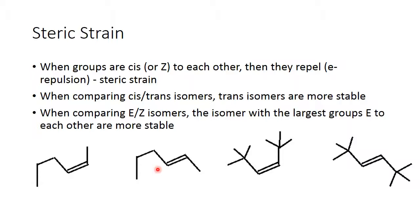Again, if both compounds can form in a reaction, the trans is more likely to form. Likewise, if both a cis and a trans alkene are in the same molecule and can react, the cis will react faster than the trans because it's less stable — as long as all other things are equal. With bulky groups, this effect is even more important.